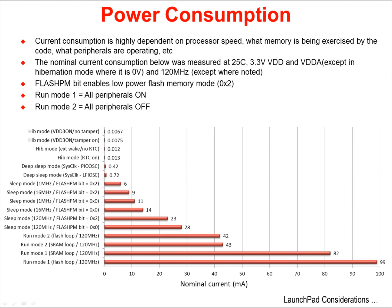Current consumption is highly dependent on the processor speed, which memory is being exercised by the code, what peripherals are operating, and other specifics. The current consumption values shown here were measured at 25°C, 3.3V VDD and VDD-A — except in hibernation mode where VDD was 0 — and 120 MHz except where noted. The flash PM bit enables low power flash memory mode. In run mode 1, all peripherals are on. In run mode 2, all peripherals are off.